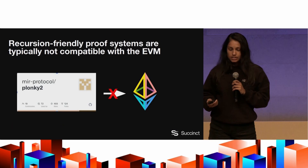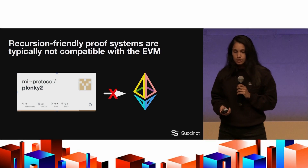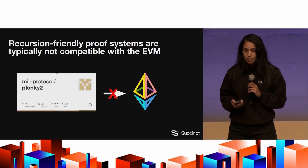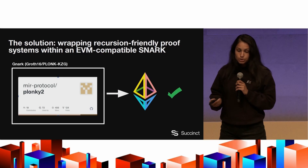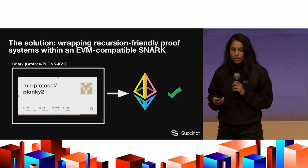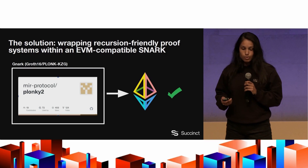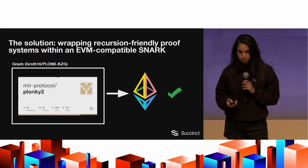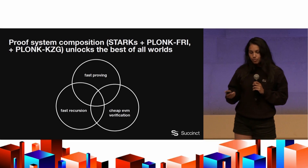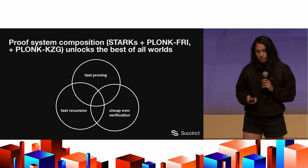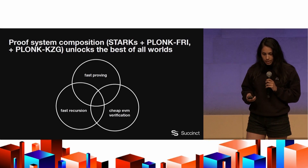One problem is that when doing all this with ZK SIMD, the Stark-based framework, and recursion, we use a proving system called Plonky2. Recursion-friendly proof systems are typically not compatible with the EVM — for cheap EVM verification it's best to use Groth16 or something pairing-based, because Ethereum has pairing precompiles. Our solution is to wrap a recursion-friendly proof system with an EVM-compatible SNARK. We take Gnark, which is Groth16 or Plonkish-KZG based, wrap the Plonky2 proof in it, and verify it in the EVM. This proof system composition — combining Stark-based, Plonkish-FRI-based, and Plonkish-KZG-based systems — unlocks the best of all worlds: fast proving for batches of signatures, fast recursion for reducing end-to-end latency, and cheap EVM verification.